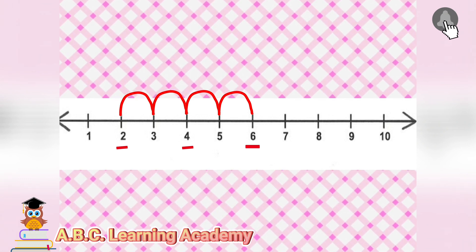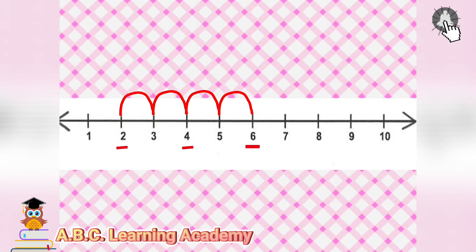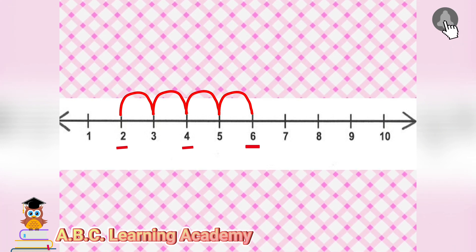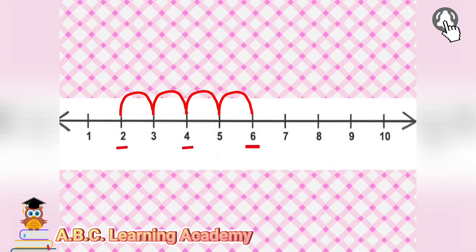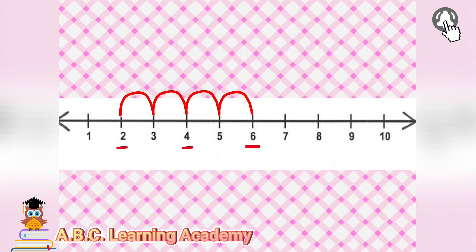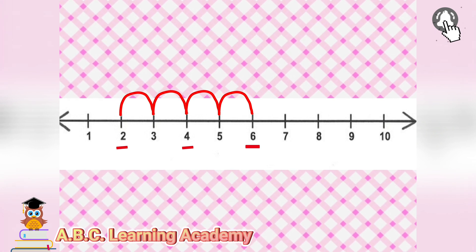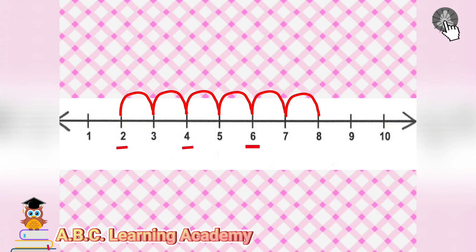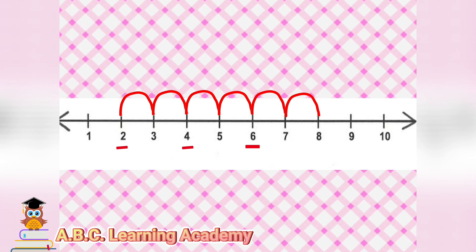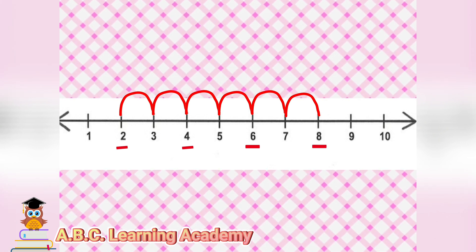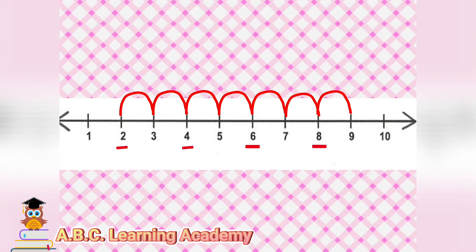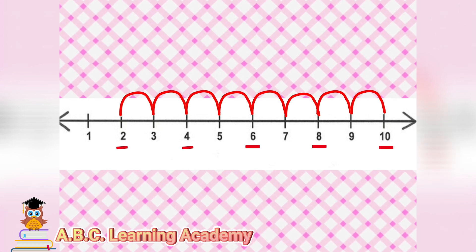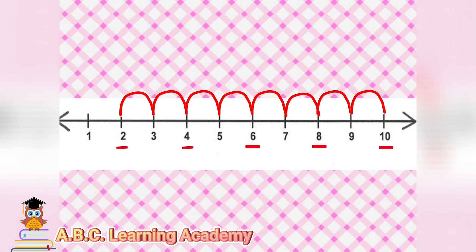This is an example of skip counting by 2. Let's do again. Let's jump forward 2 times. 1, 2 — so we reach number 8. 1, 2 — we reach number 10.